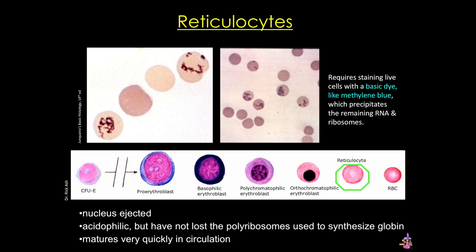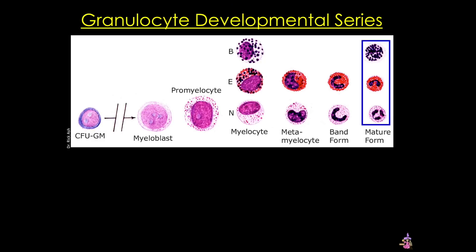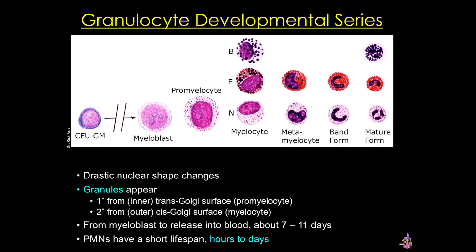The next developmental series with recognizable stages is the granulocyte series, where the final cell figures are the polymorphonuclear neutrophil or PMN, the eosinophil, and the basophil. In contrast to the erythrocyte lineage, granulocytes undergo very dramatic changes in nuclear shape and they acquire granules as they mature. They also tend to have a very short lifespan. Like the erythrocyte lineage, the cells lose the ability to divide as they mature — here the myelocyte is the last cell capable of mitosis.